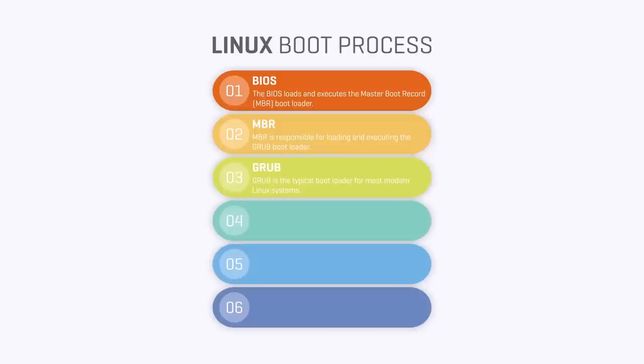On step four, we get the kernel, which is referred to as the core of any operating system as it has complete control over everything in your system. At this stage, the kernel selected in the previous step mounts the root file system available in the grub.conf file and then executes the /sbin/init program. After that, the kernel establishes a temporary root file system until the real file system gets mounted.